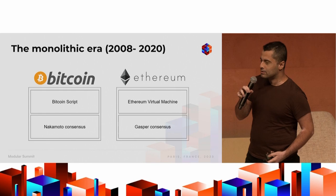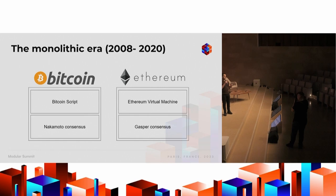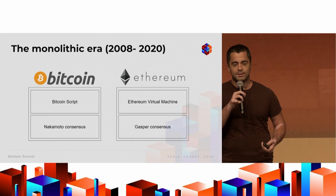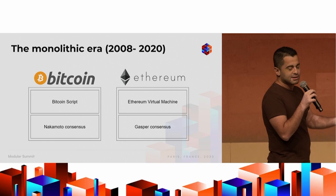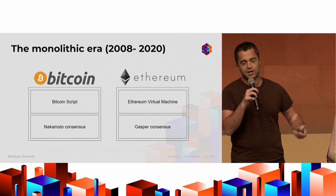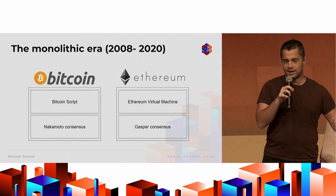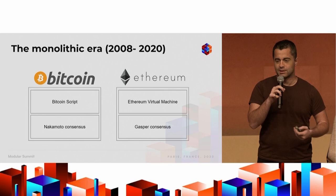When the Bitcoin white paper came out in 2008, it introduced a model of blockchains that stuck around for the next decade — the monolithic model, the monolithic era. This is a model where a blockchain couples consensus and execution, where every user has to execute every transaction of every other user, which we all know doesn't scale. It limits flexibility because you're enshrining a specific execution environment and can't experiment with different ones.